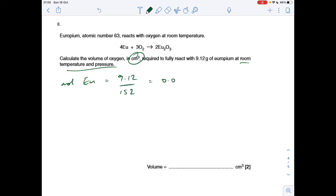So the moles of oxygen that is needed for a full reaction is 3 over 4 times those 0.06. So that's 0.045 moles, and therefore the volume at RTP is going to be 0.045 times 24,000 again for centimetres cubed, and that's 1080.